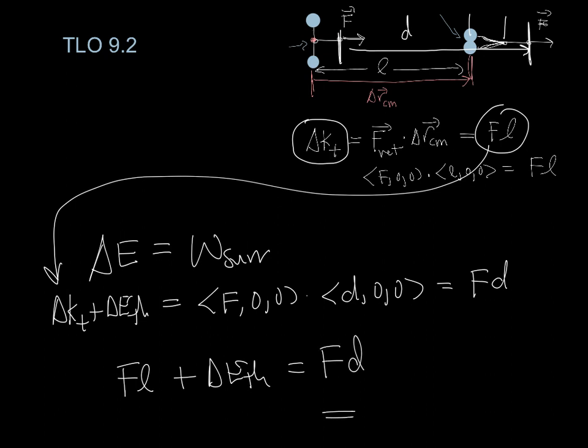And that allows me, finally, to solve for the change in the thermal energy: F times D minus L. So, to the degree that D is greater than L, we get excess work done by this surrounding force, and that turns into thermal energy. And that's the basic idea.